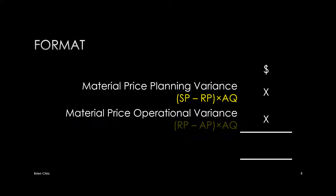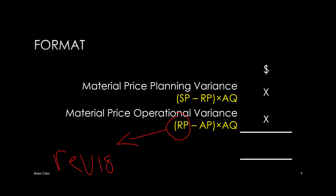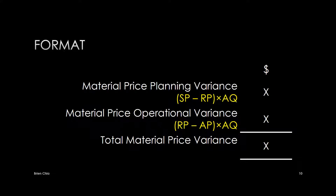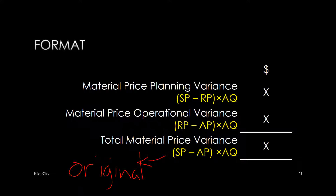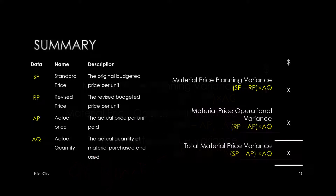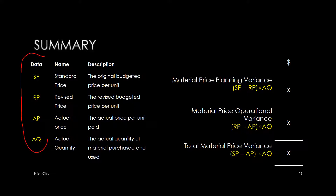The second level is the material price operational variance. The formula is the revised price minus the actual price, multiplied by actual quantity. Together, when you add these two variances up, you get the total material price variance, which is between the original standard price from the original budget and the actual price — the money you actually pay for your materials.